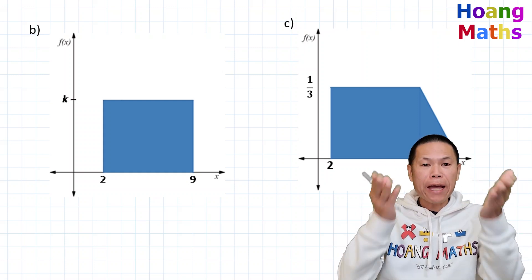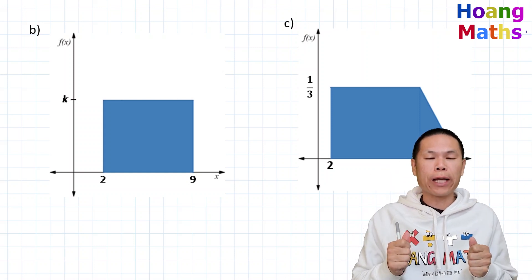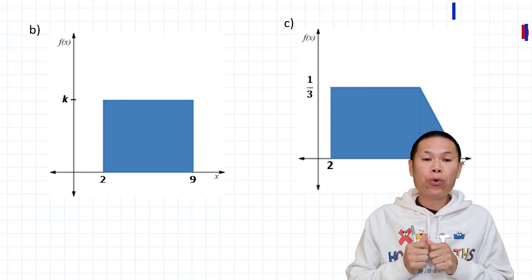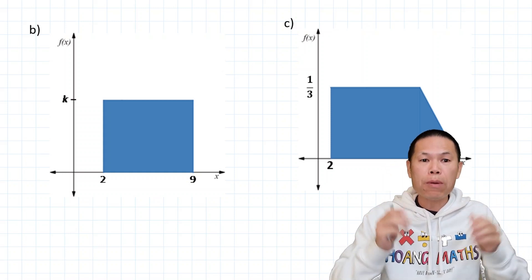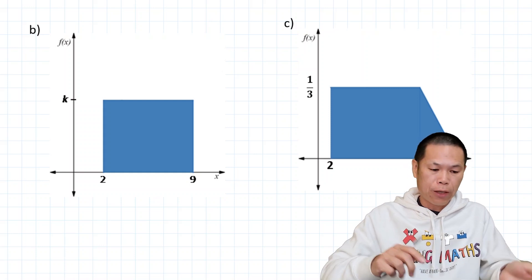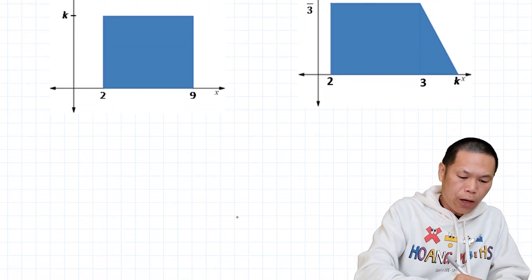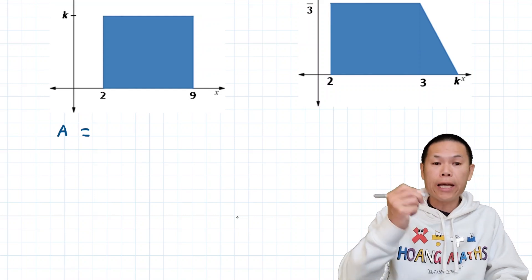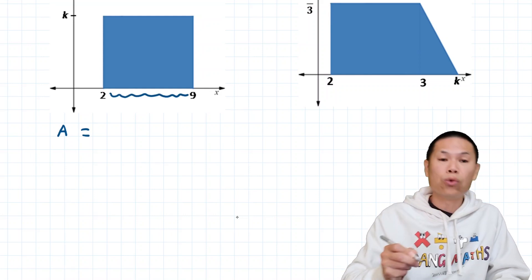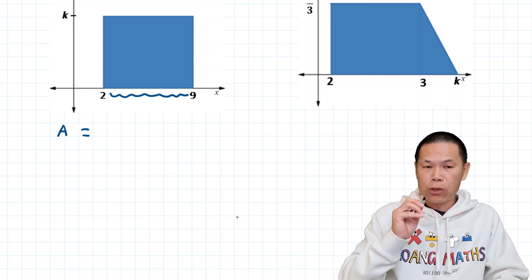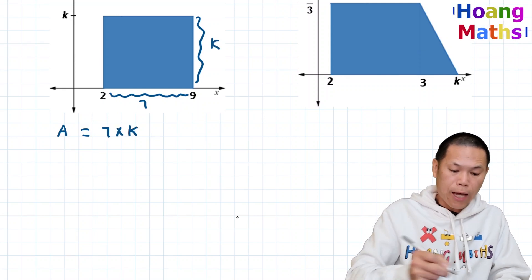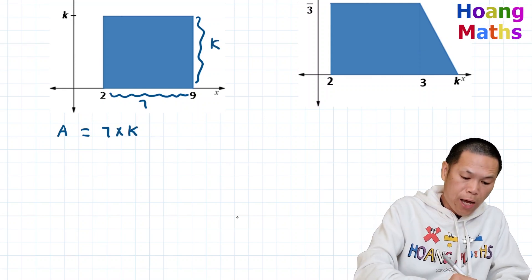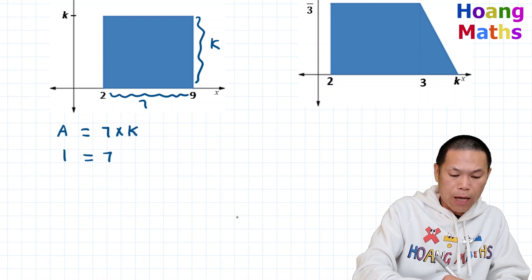Hi there, I'm back. How did you go? Part B — it is a rectangle and the area must equal one because it is a probability density function. The length is from two to nine units, so nine minus two is seven. The width is k. So seven times k equals one.